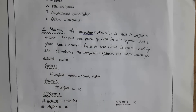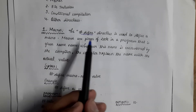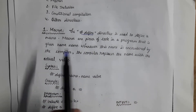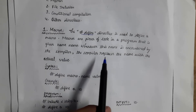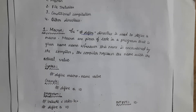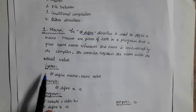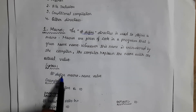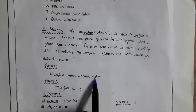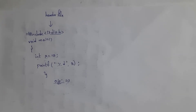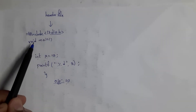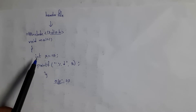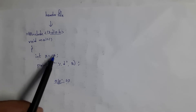The first type is macros. The #define directive is used to define a macro. Macros are a piece of code in a program that is given a name. Whenever this name is encountered by the compiler, it replaces that name with the defined value. The syntax is: #define MACRO_NAME value. For example, a normal program uses int a = 10 inside void main, and printf("%d", a) gives output 10.